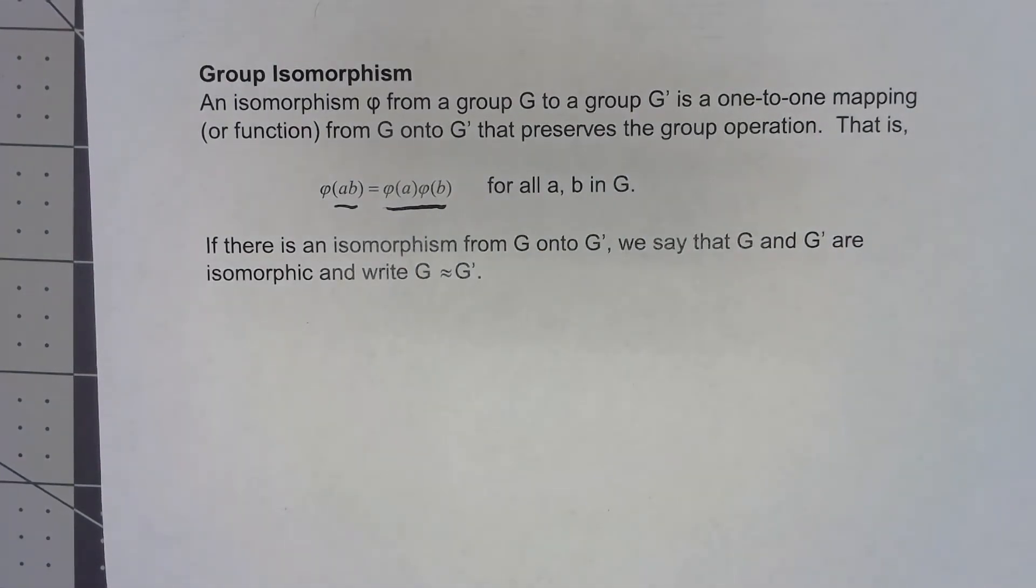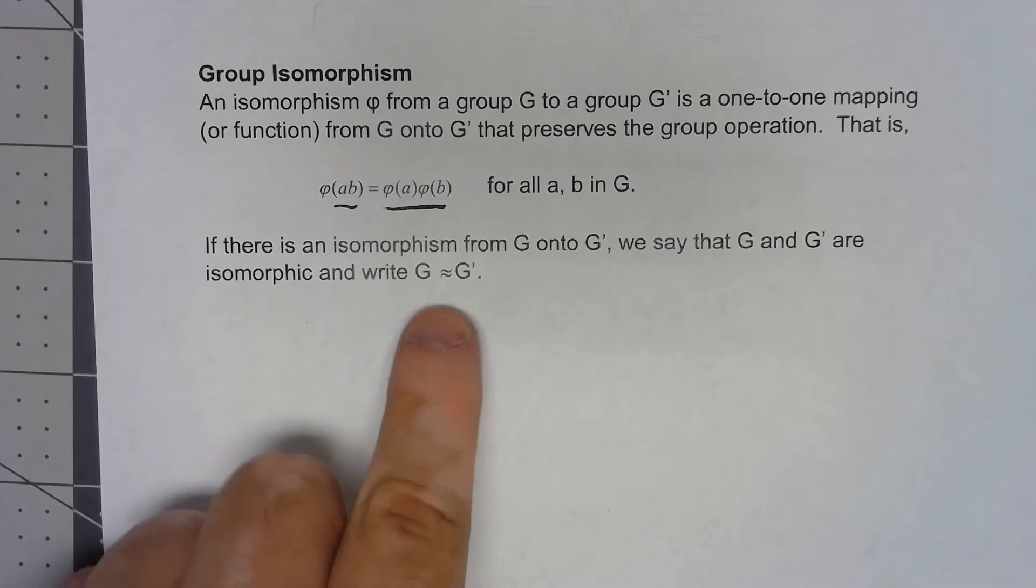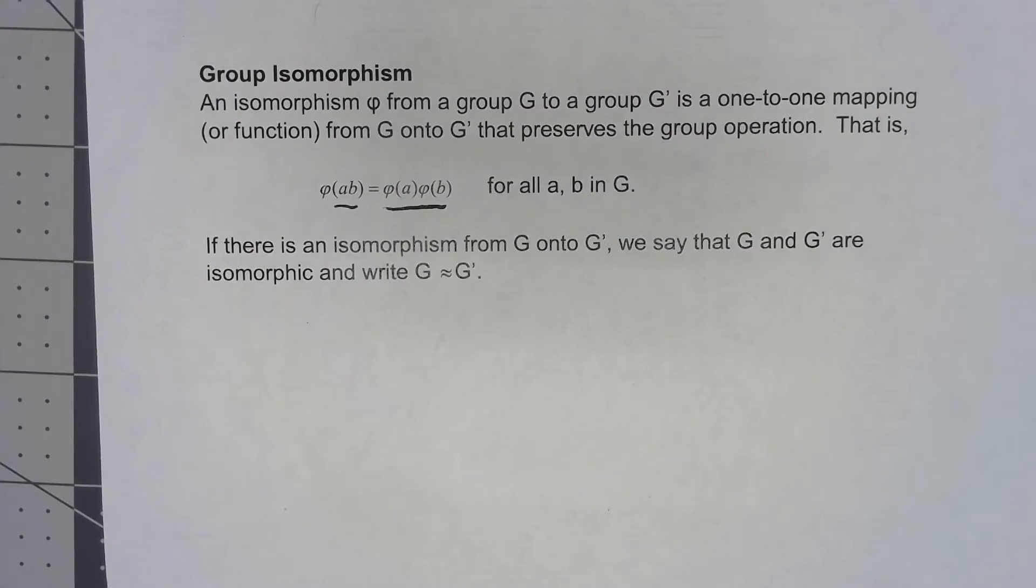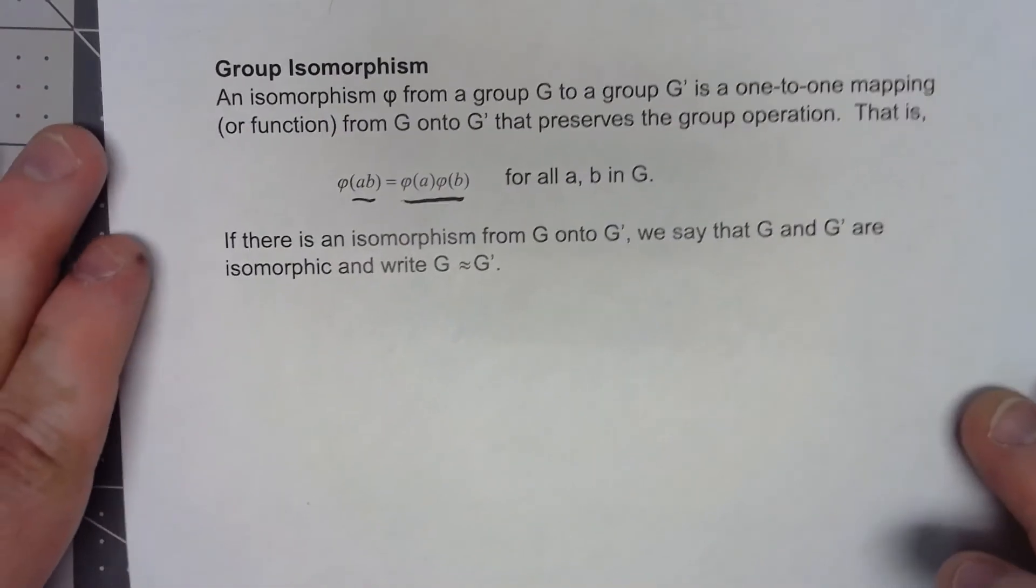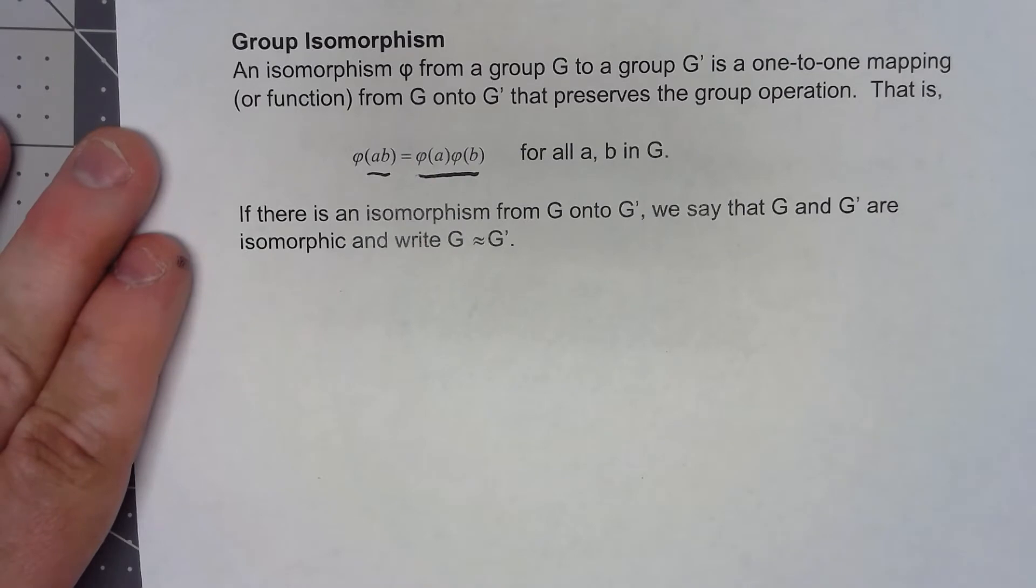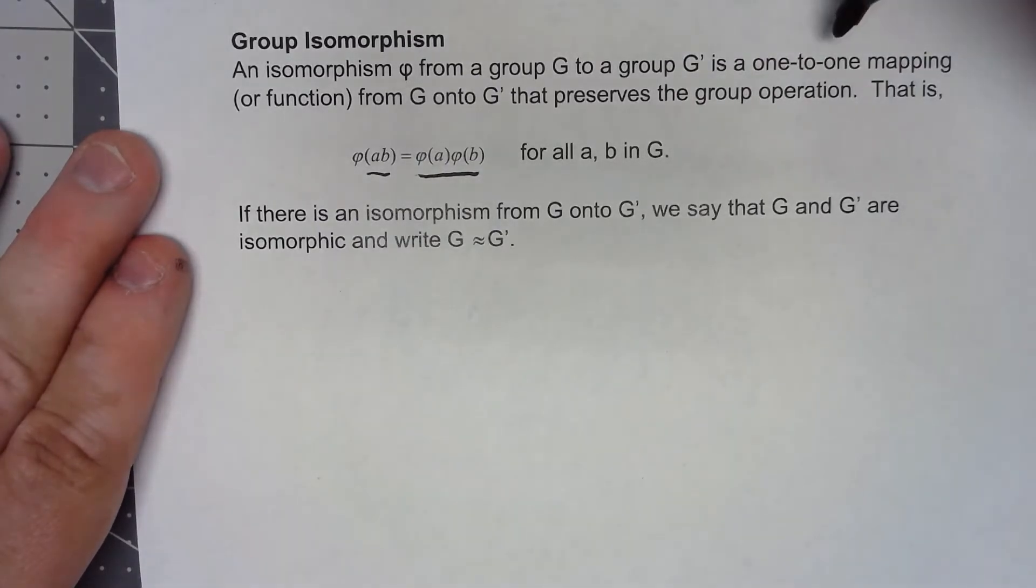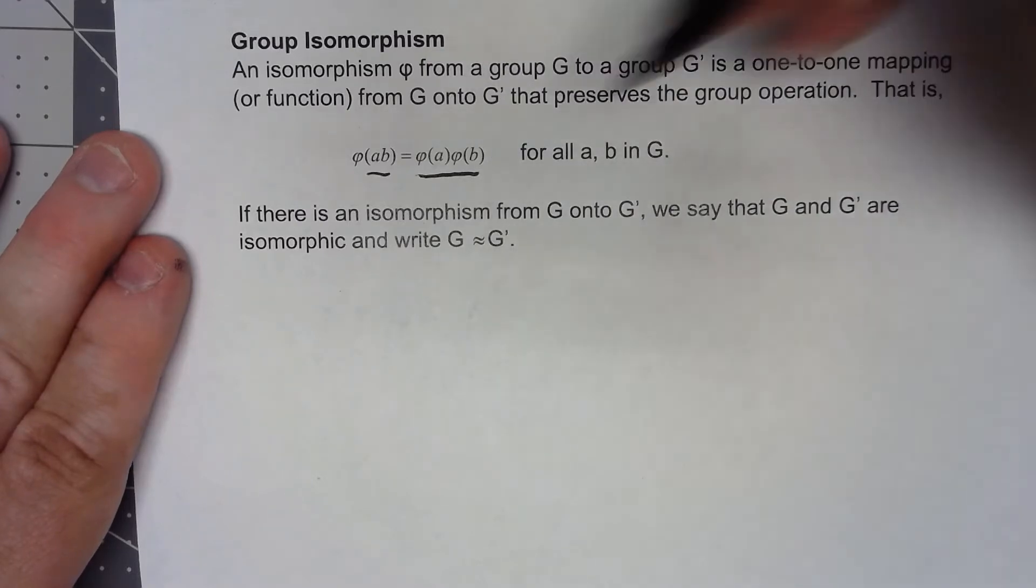If we have those things, then we say that there's an isomorphism between these groups, we say that they're isomorphic, and we write G isomorphic to G prime. When you're showing that two groups are isomorphic, there's sort of four things you've got to do. First, you have to define what your function is, then show it's one-to-one, show it's onto, and show it has this property.